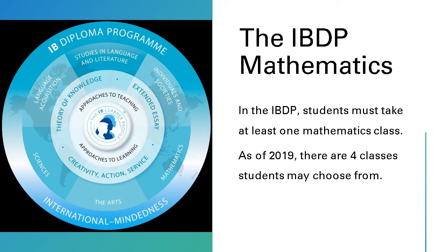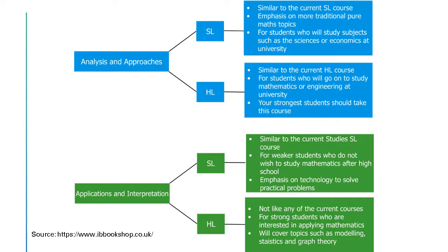As of 2019, there are four classes students may choose from. The first choice is the Analysis and Approaches program, and students can take either standard level or high level. This program focuses more on pure mathematics, and students who wish to study mathematics or engineering in college may choose it.